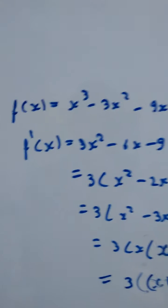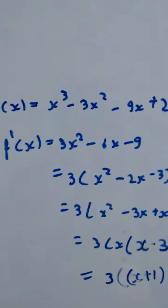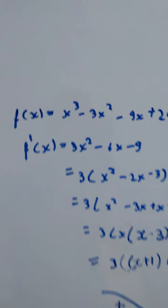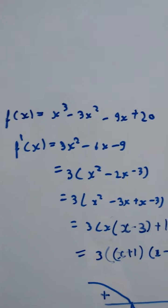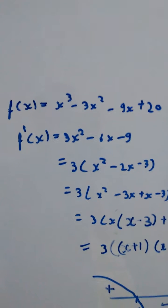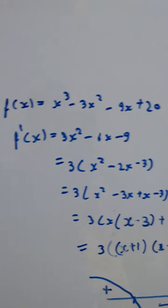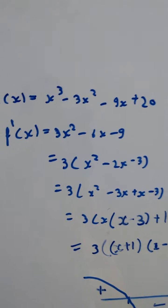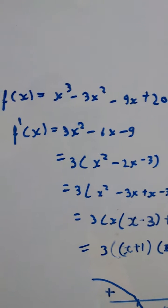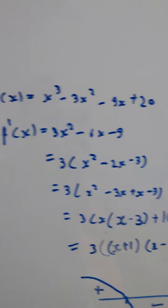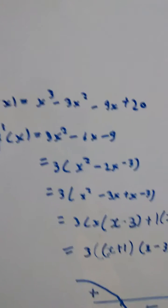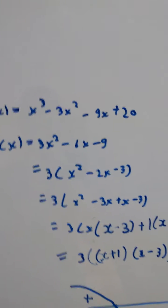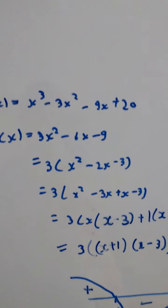Hello everybody, I have been mailed this question last night. The question asks: tell me where the function is strictly increasing. The function is x cubed minus 3x squared minus 9x plus 20.